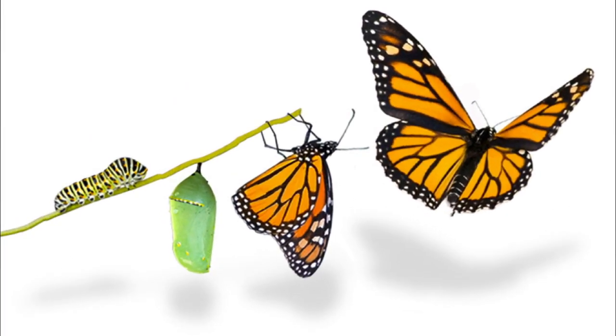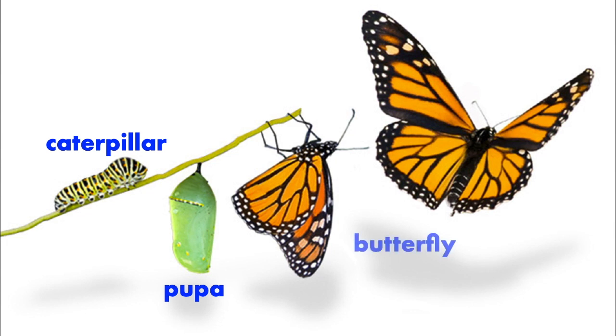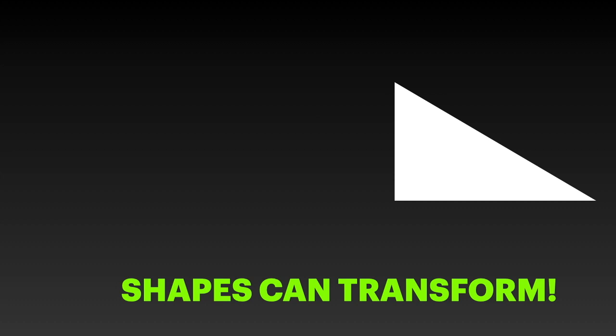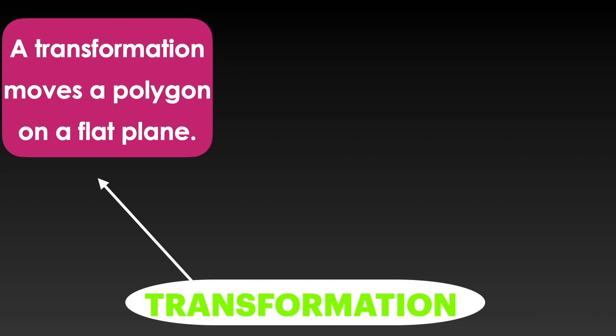I'm sure you remember in science class discussing how a butterfly transforms — changing from an egg to a caterpillar, or larva to a pupa or chrysalis, then to a butterfly. Well, shapes can transform as well. That doesn't mean I expect this circle to magically turn into a triangle.